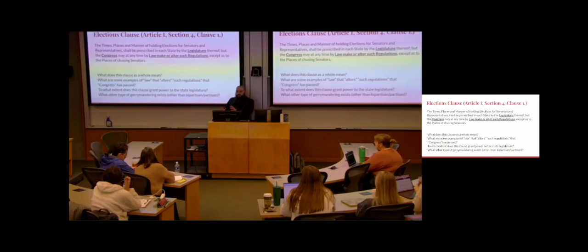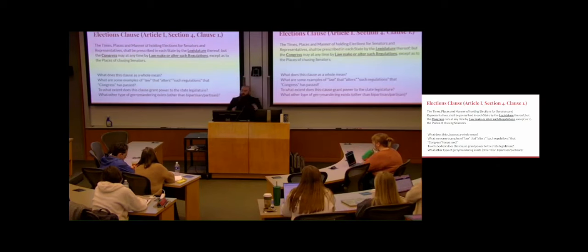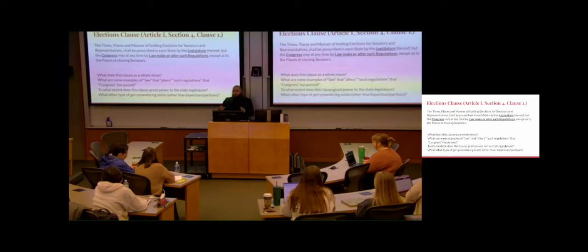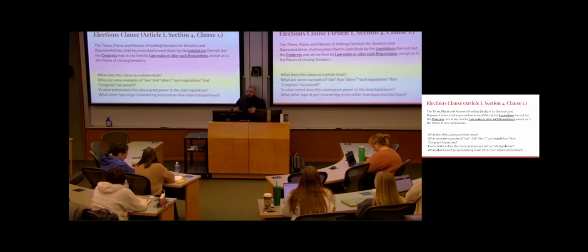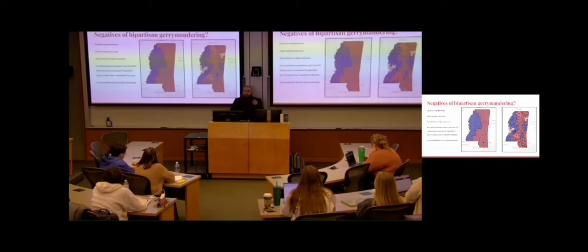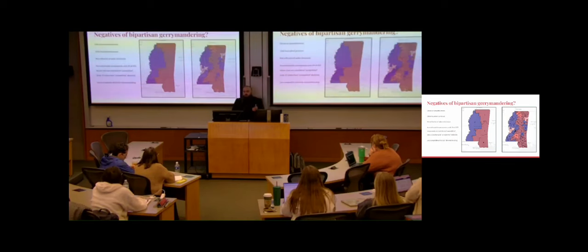The state legislatures get to choose the manner of how to choose Congress people. The state legislature — which are lower-level legislators — gets to draw the maps, but Congress retains the right to regulate the drawing of those maps. For instance, with the Voting Rights Act it was about diversity representation. States in the South would draw maps that allowed no minority representation. When they passed the Voting Rights Act, that's actually what created the second district in Mississippi — that district would not exist without the Voting Rights Act.